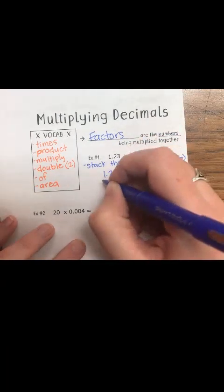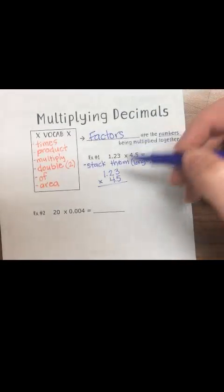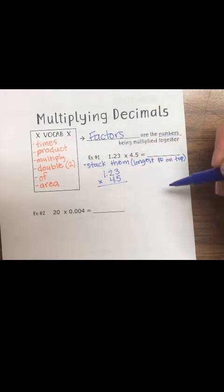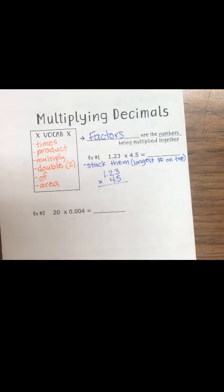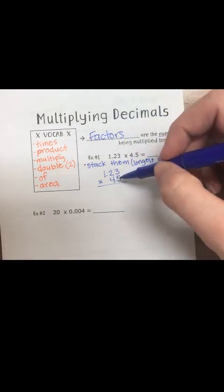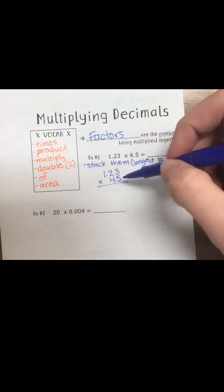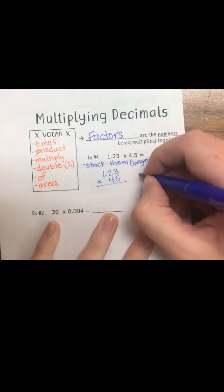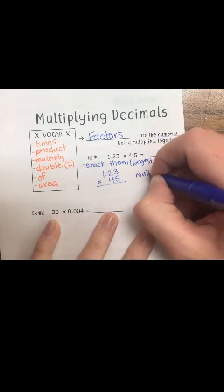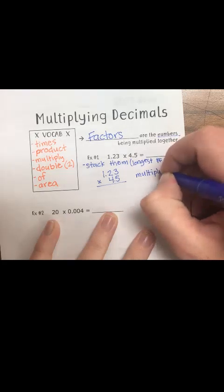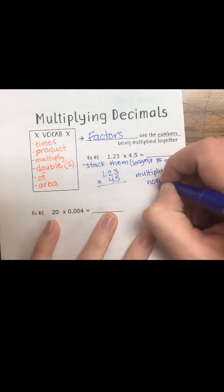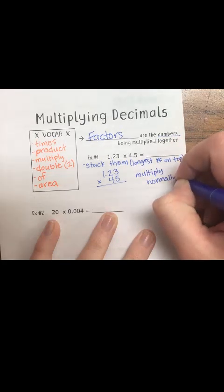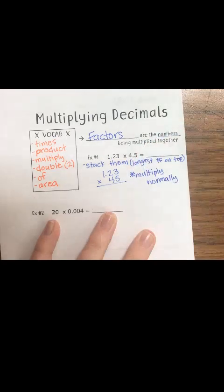I line up my two back numbers and then put the multiplication sign. Notice that we do not line up our decimals when we multiply — it does not matter. We worry about our decimals at the end. When we're adding and subtracting we line them up, but when multiplying we do not — we just put the longest one on top. Now I can multiply normally.